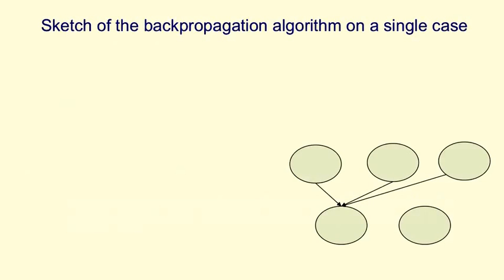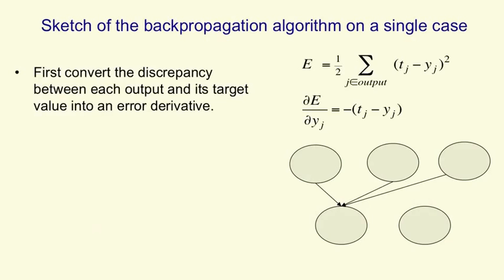Here's a sketch of how backpropagation works for a single training case. First, we define the error as the squared difference between the target values of output unit J and the actual value the net produces for output unit J, imagining several output units. We differentiate that and get the familiar expression for how the error changes as you change the activity of output unit J. The index on a unit tells you which layer it's in: the output layer has a typical index of J, and the hidden layer below it in the diagram has a typical index of I.